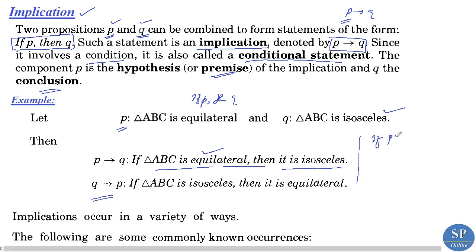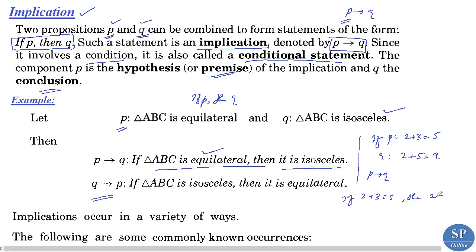Consider another example where p is '2 plus 3 equals 5' and q is '2 plus 5 equals 9'. Then p implies q means: if 2 plus 3 equals 5 then 2 plus 5 equals 9. And q implies p means: if 2 plus 5 equals 9 then 2 plus 3 equals 5.